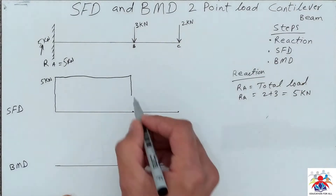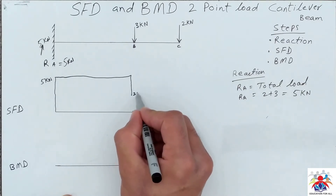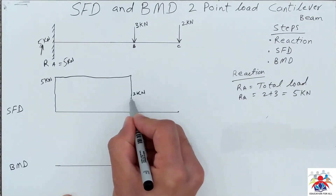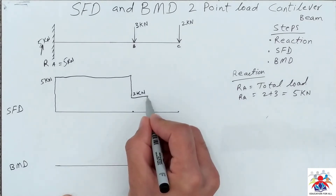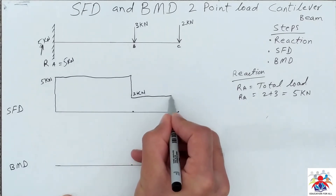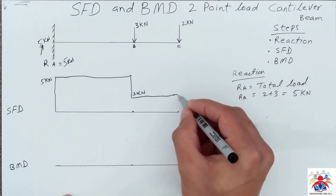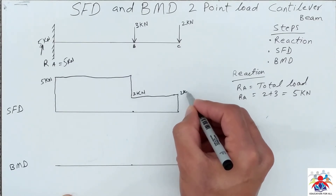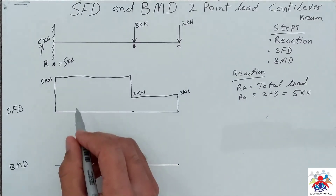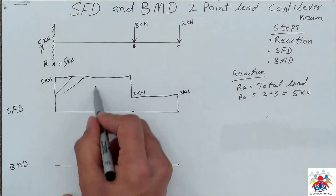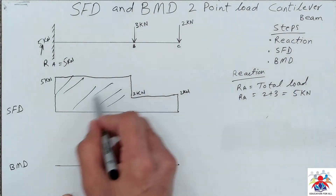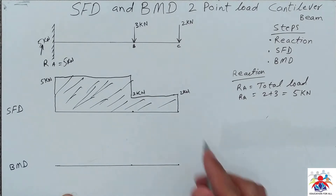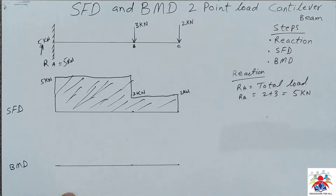So this is 3 kilonewtons, then we move to point C and it will come down 2 kilonewtons. That's how our shear force diagram will look like.